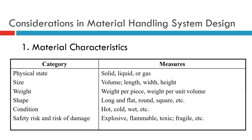Key considerations in material handling system design include material characteristics. These are categorized by measures such as physical state — solid, liquid, or gas — size including volume, length, width, height, weight per piece and per unit volume, shape such as long and flat, round, or square, condition including hot, cold, or wet, and safety risks such as explosive, flammable, toxic, or fragile materials.